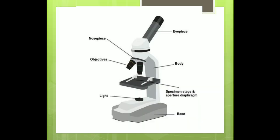Proper information about the cells of living organisms could be observed only after the discovery of an improved microscope. For about 250 years after Hooke's initial observations, very little was known about the cell. Today we know a lot about cell structure and its functions because of improved microscopes with high magnification. As you can see in the picture, a microscope has an eyepiece, a body with two objectives — high power and low power — a nosepiece, and a stage where specimens are kept, along with a light source and base.